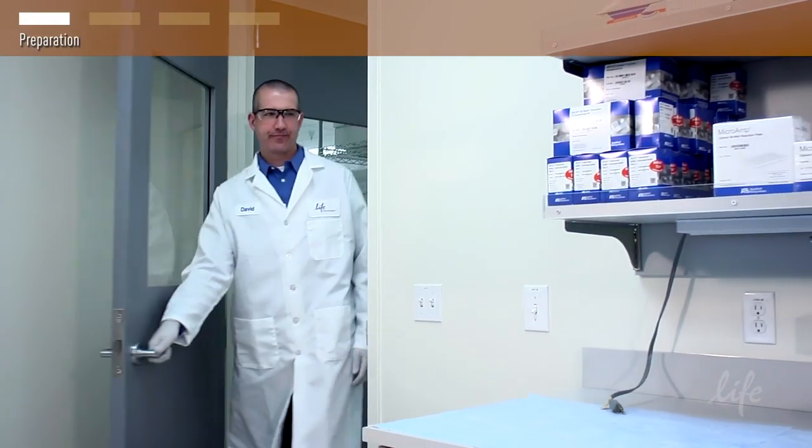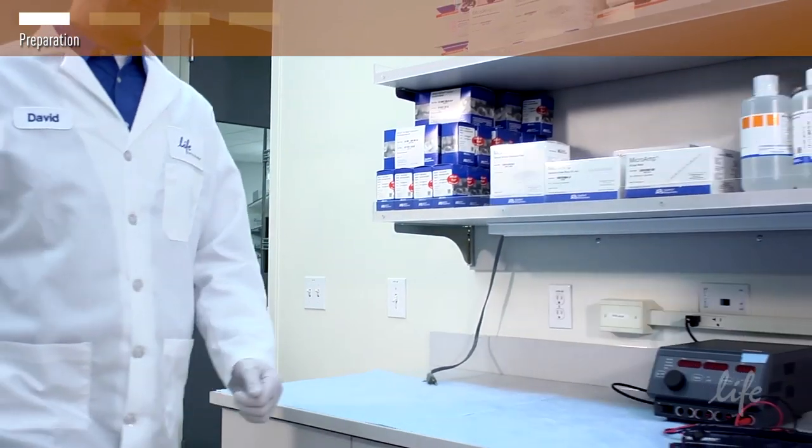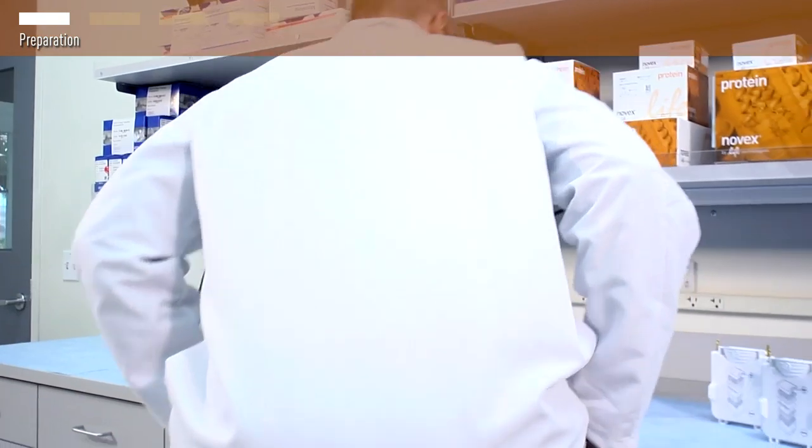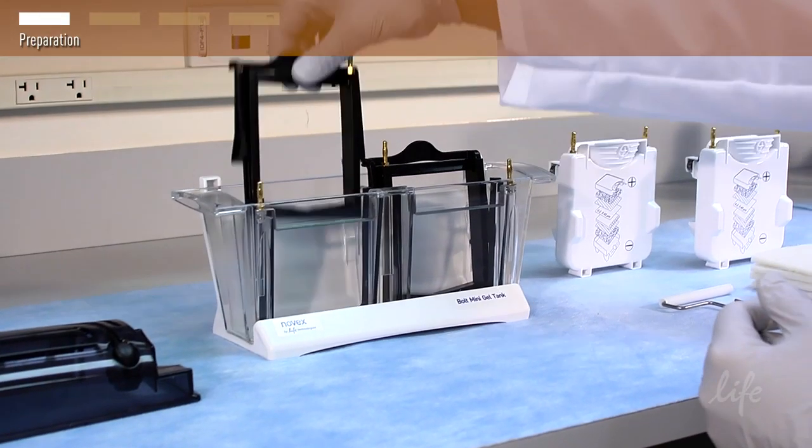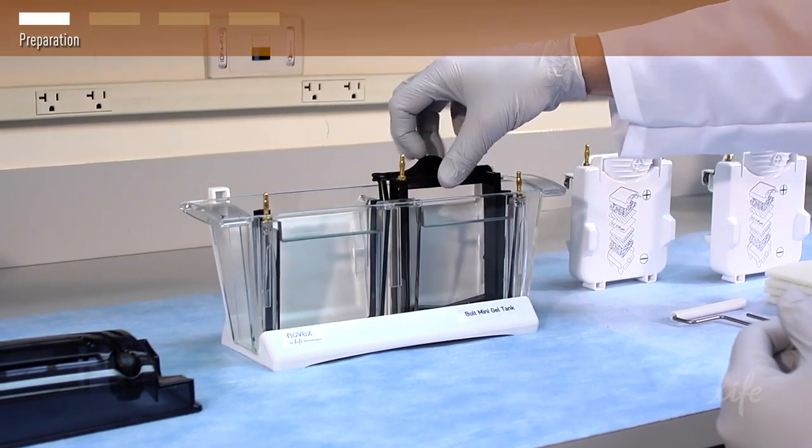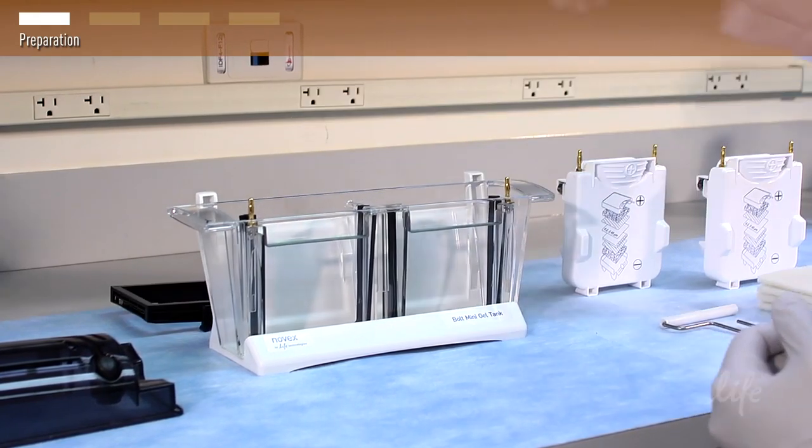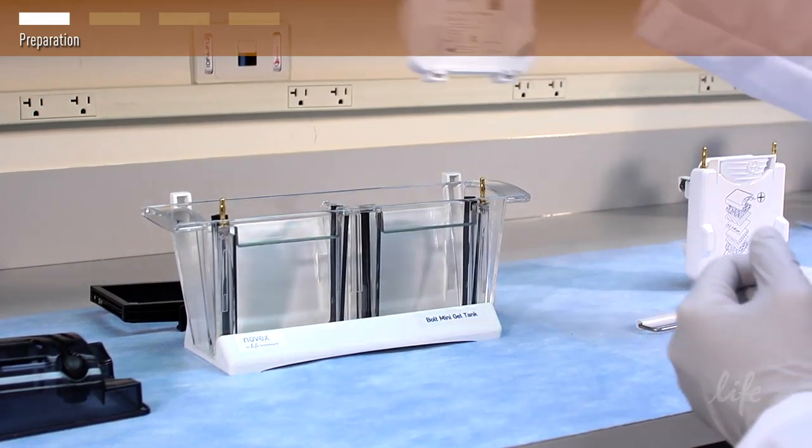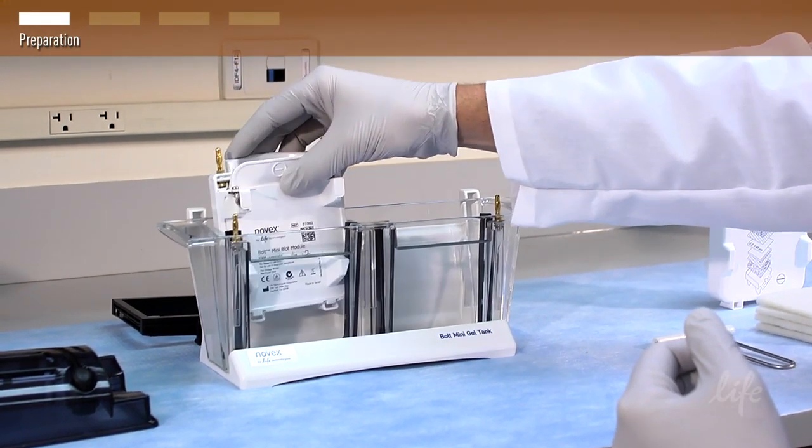In this video you will see how a Western transfer is performed using the Bolt mini blot module and tank. Make sure cassette clamps are removed before you set up your transfers. One gel is transferred per module and two modules fit in one Bolt tank.